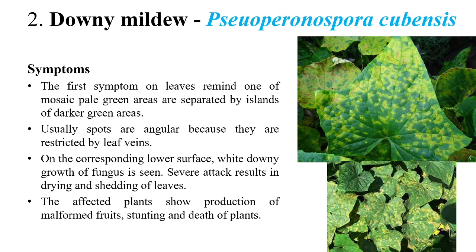On the lower surface, downy growth of the fungus can be clearly observed. In later stages, drying and dying of the leaf along with falling of leaves can occur. Due to downy mildew, plant height is reduced, leading to production of low quality fruits, and in later stages stunting and death of the plants can occur.